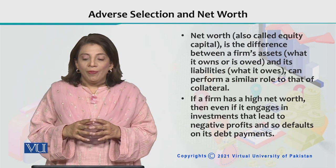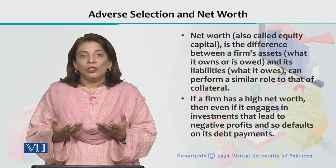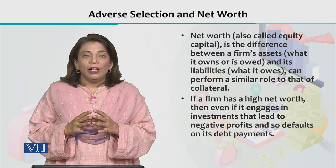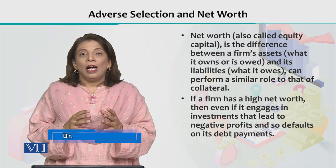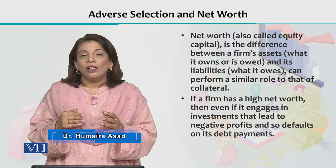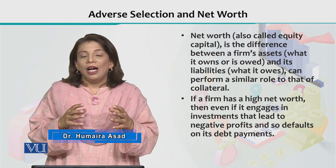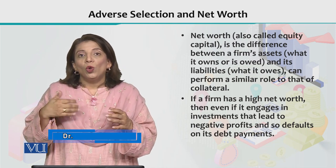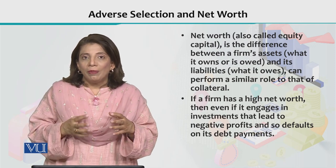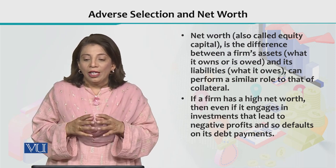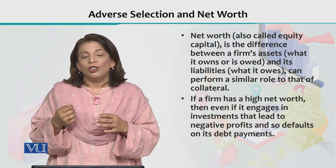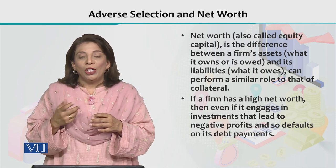Net worth is basically also called equity capital, and it is the difference between a firm's assets and the firm's liabilities — what the firm owns and what the firm owes. That difference gives you equity capital, also known as book value or net worth.